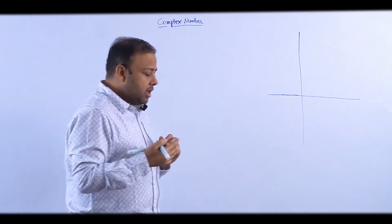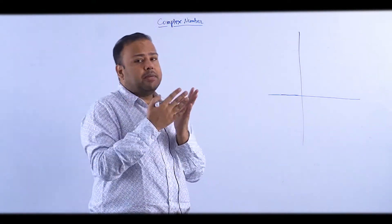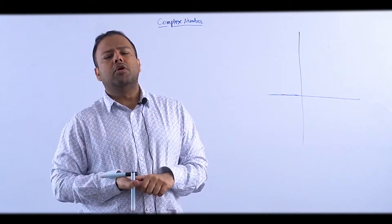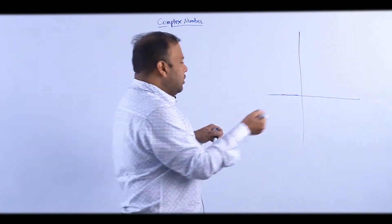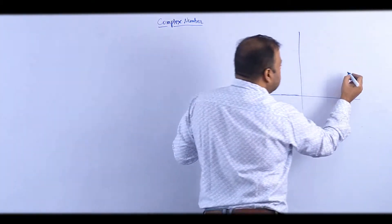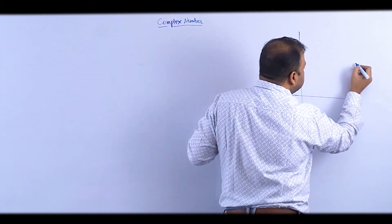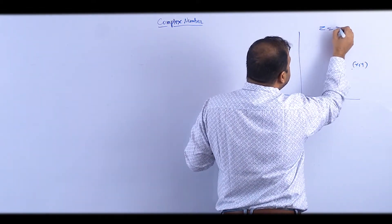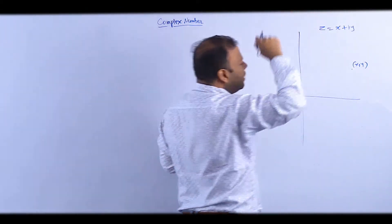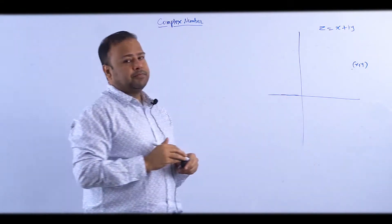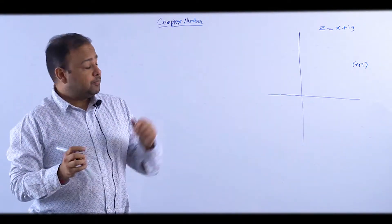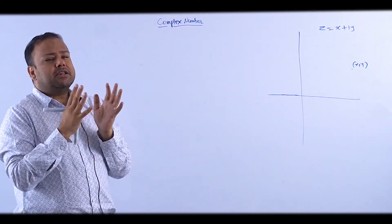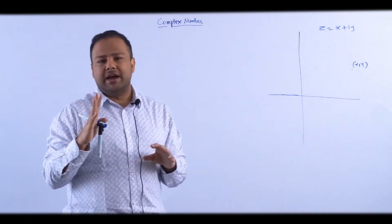Two dimensions — one real part, one imaginary part. Suppose this point is (x, y). What does the number mean? x plus iy. This complex number is a Cartesian coordinate idea.